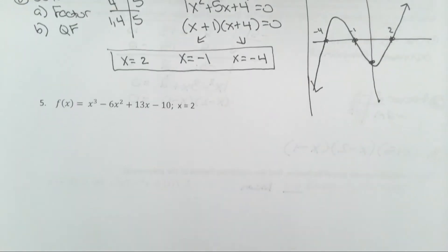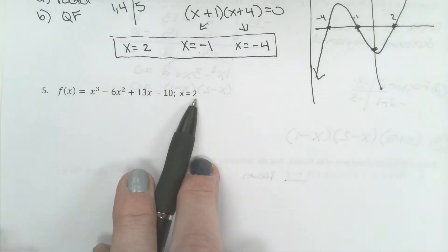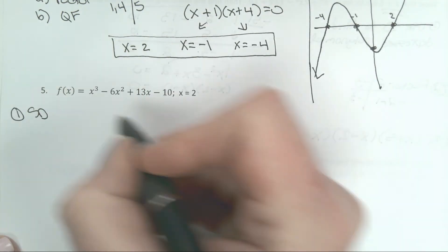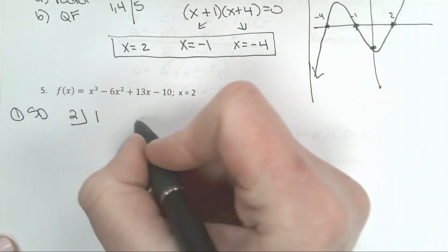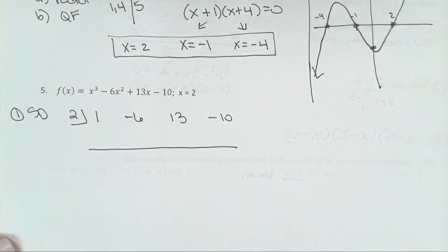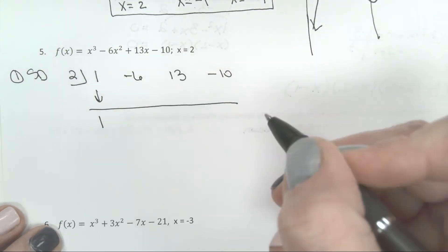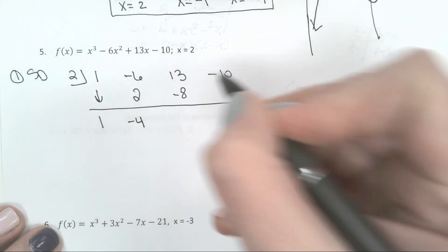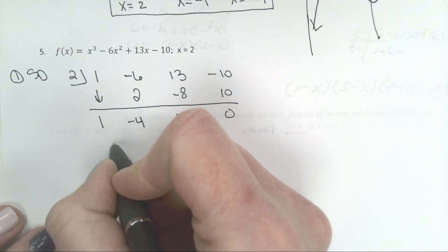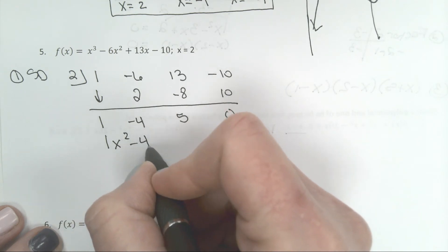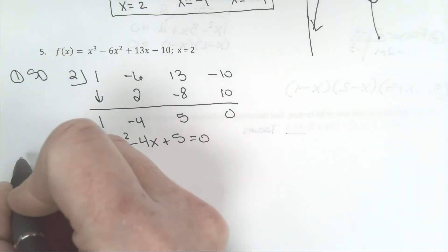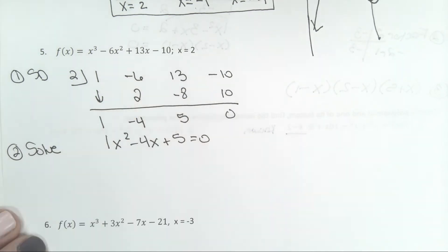Let's do another one. I know I have a zero at 2 again, so the first thing I'm going to do is run synthetic division. Bring down my first number, multiply, add, multiply, add, multiply, and add. Put your variables back in.